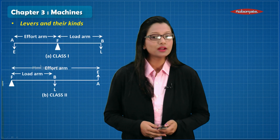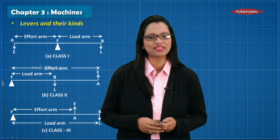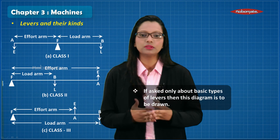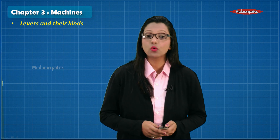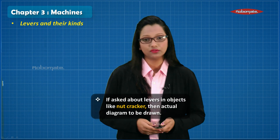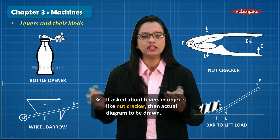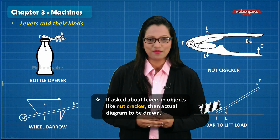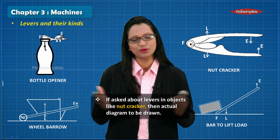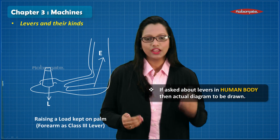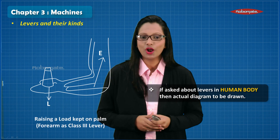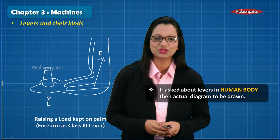Moving on to the last chapter in the mechanics section — Machines. The first type of diagram you come across is levers and their types. If the question asks you to represent the basic structure of types of levers, the basic diagrams are enough. But if the question demands you draw an example, like a nutcracker or a wheelbarrow, you need to draw the complete diagram, not forgetting the position of fulcrum, load, and effort. For levers in the human body, draw the actual picture of that human part and again show the position of fulcrum, load, and effort.